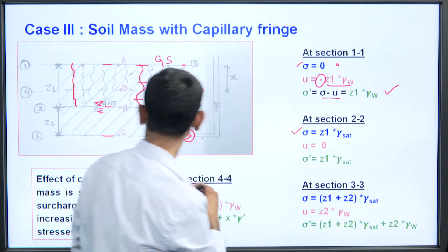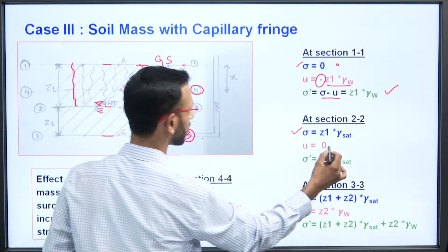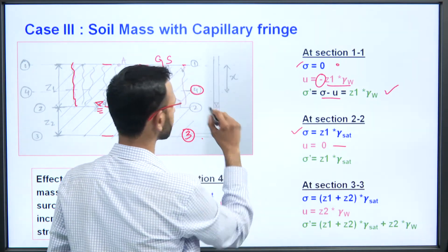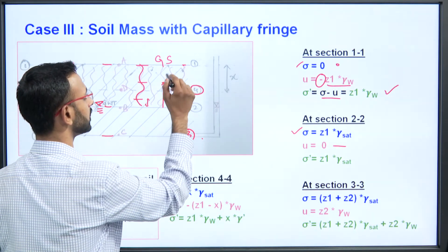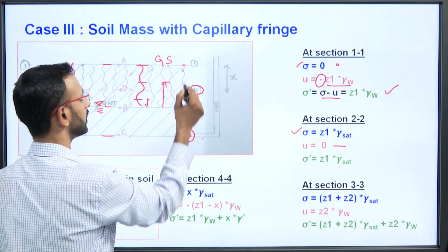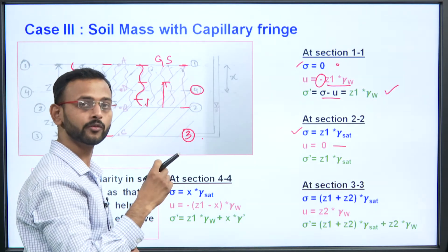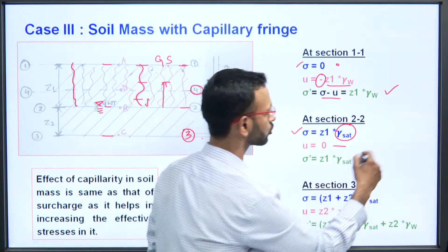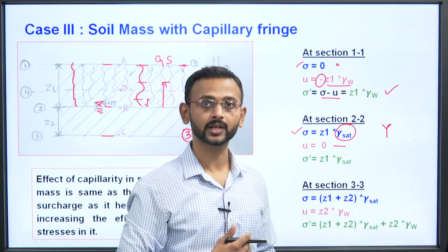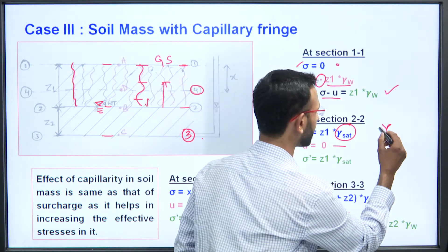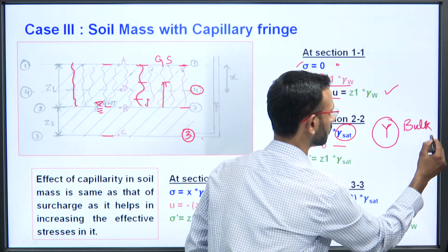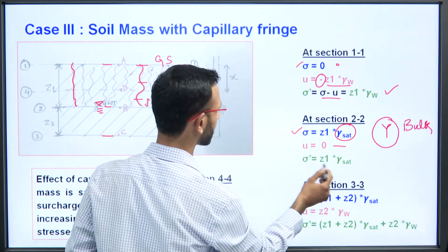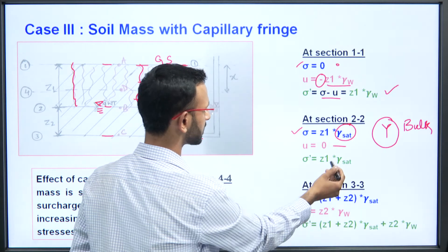At section 2-2, where the groundwater table level is, pore water pressure is 0 — if you apply a piezometer there will be no rise in water level. The total stress is z₁ × γ_saturated, because the soil above section 2-2 up to 1-1 is saturated by capillarity. If capillarity does not fully saturate the soil, use the bulk unit weight γ_bulk instead. Effective stress equals z₁ × γ_saturated.